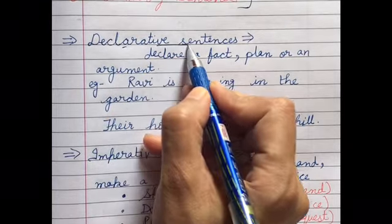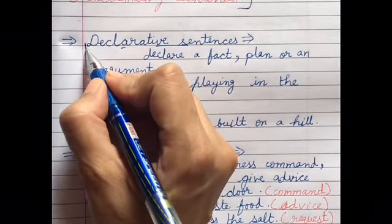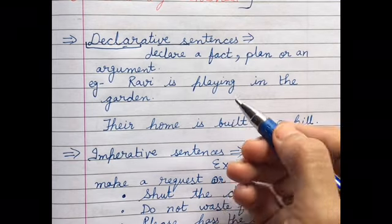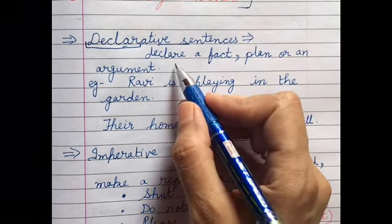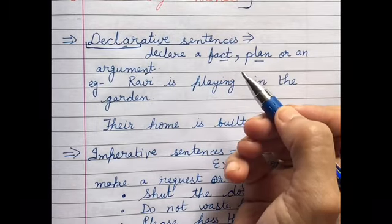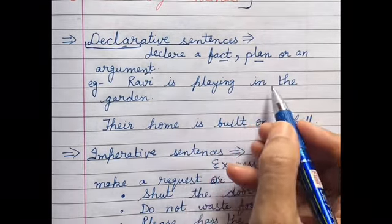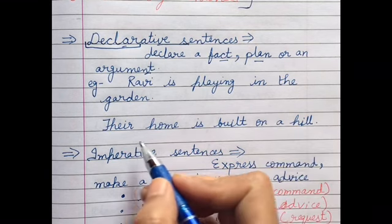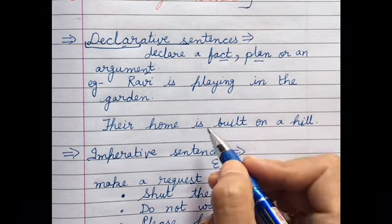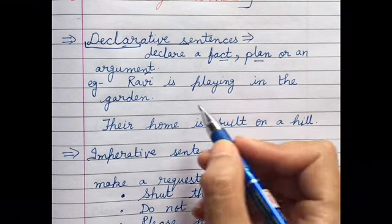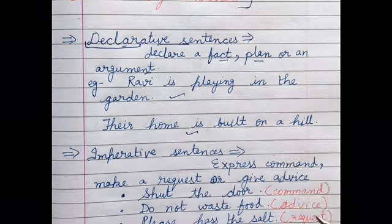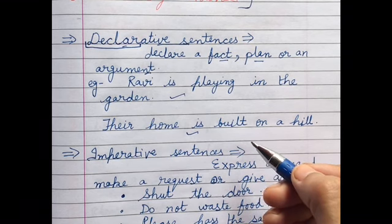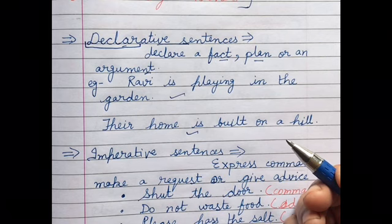The first is declarative sentences. Declarative, as the name indicates, means to declare — to announce something, share facts, or share plans. So they declare some fact, plan, or an argument. For example: 'Ravi is playing in the garden' — we are telling something about Ravi to others. 'Their home is built on the hill.' In both sentences, we are telling some fact or plan about somebody to others. That is your declarative sentence.